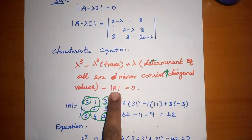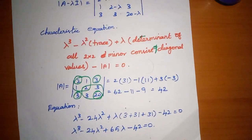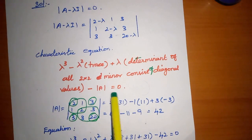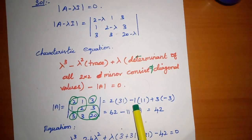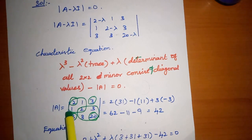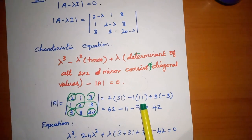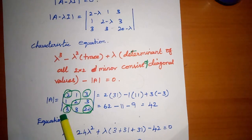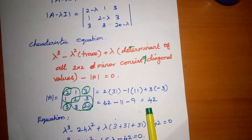Minus the determinant of A equals zero. To substitute into the characteristic equation, first find the determinant of A. 2 into (2 into 20 = 40, minus 9 = 31), minus 1 into (1 into 20 = 20, minus 3 into 3 = 9, so 20 minus 9 = 11), plus 3 into (1 into 3 = 3, minus 2 into 3 = 6, so 3 minus 6 = minus 3). Solving gives determinant A equal to minus 42.